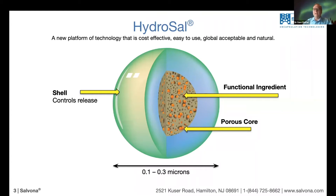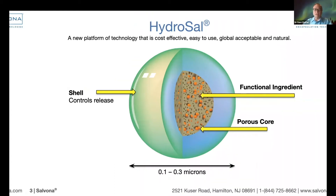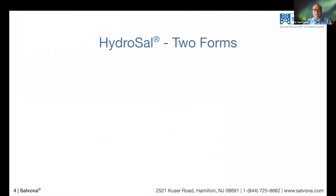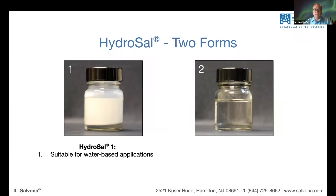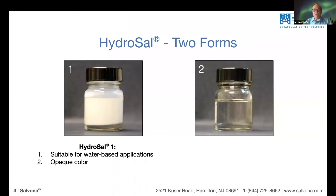That is the basic structure of Hydrosal. There are two types of Hydrosal. Hydrosal Type 1, which is what you see in the picture, is a technology suitable for water-based applications only — compatible with different types of bases that are water-only. What's unique about it is that it is opaque. Hydrosal 1 has a special structure and a very characteristic appearance.